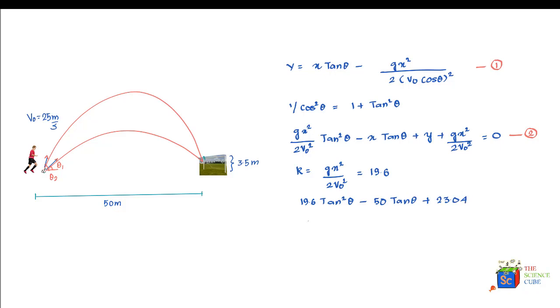Solving for tan theta, we get tan theta equals 1.95 or 0.605. The corresponding angles are theta 1 equals 31 degrees and theta 2 equals 63 degrees.